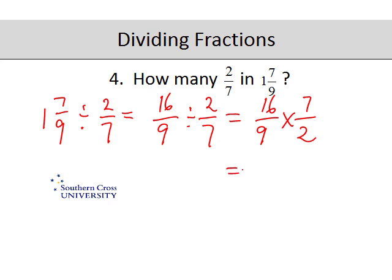Not a lot of cancelling here but there is a little bit. 2 goes into 2 once and 2 goes into 16 eight times. 7 eights are 56 over 9.